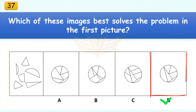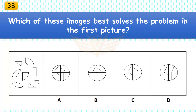Which of these images best solves the problem in the first picture? The correct answer is D. There are six pieces in the assembled puzzle, three of which are triangles.